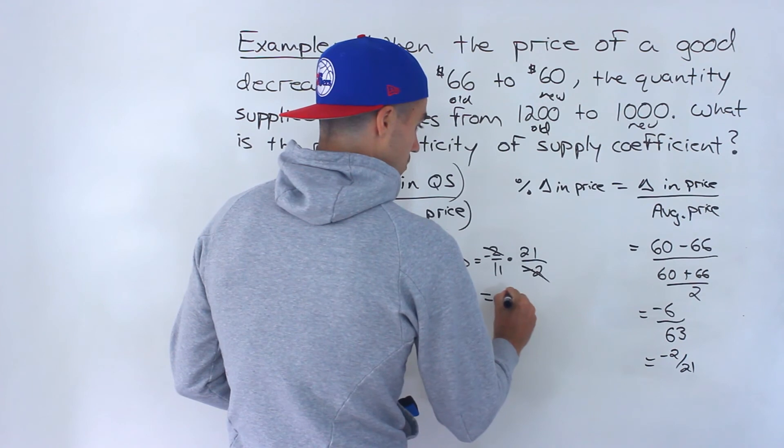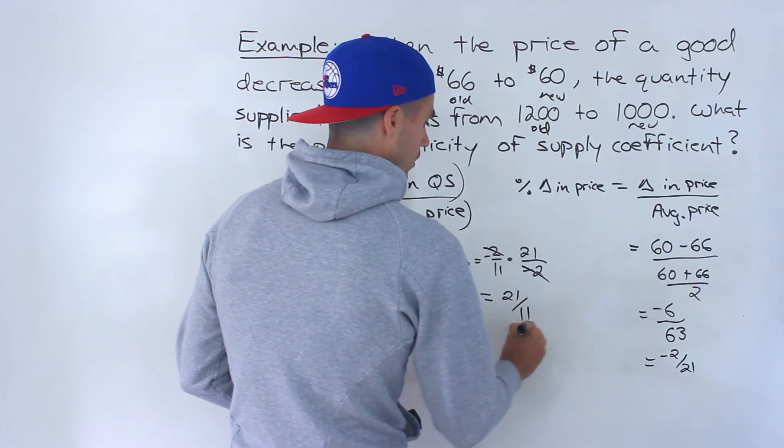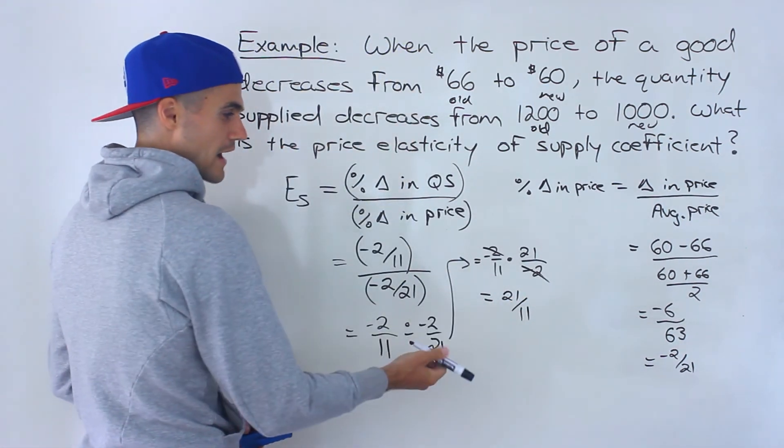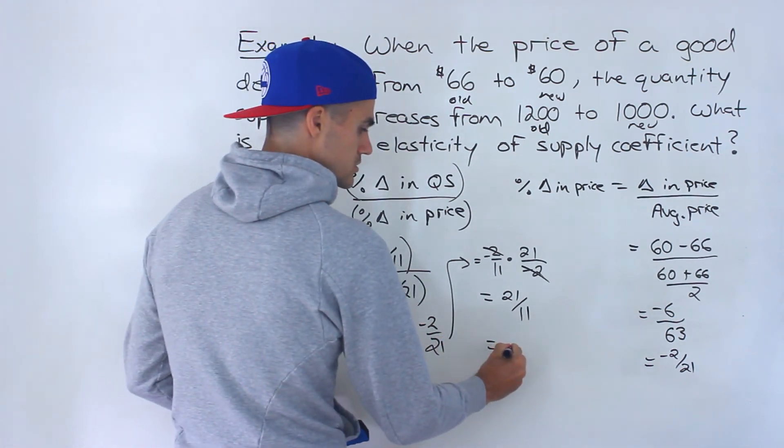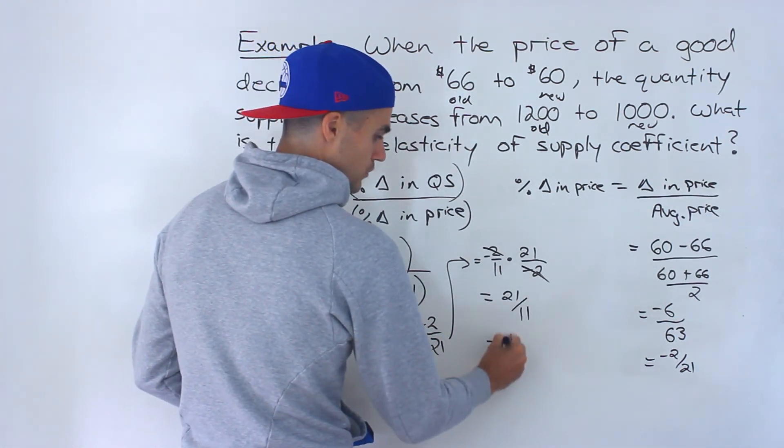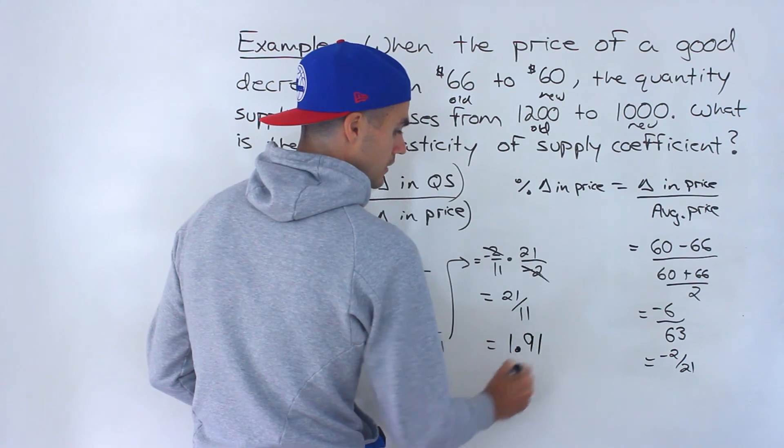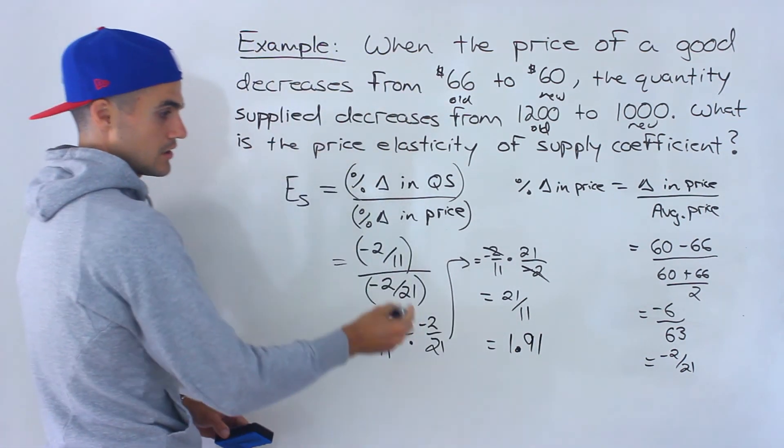And so the final answer would be 21 over 11. So that's the fraction format. Again, usually it's going to be in decimals and the decimal for this is going to be 1.91.